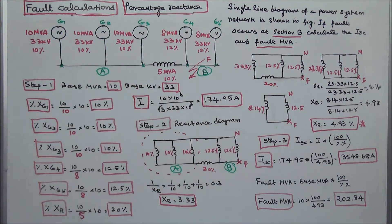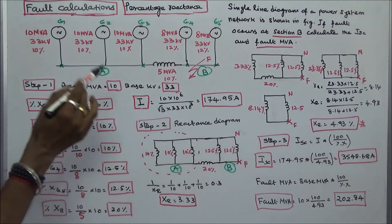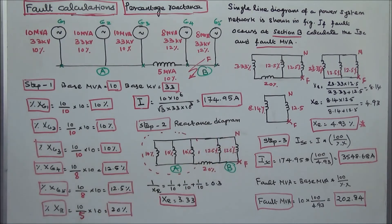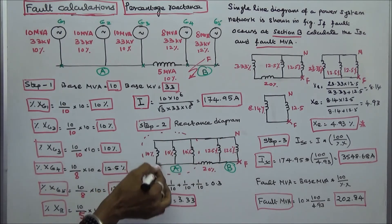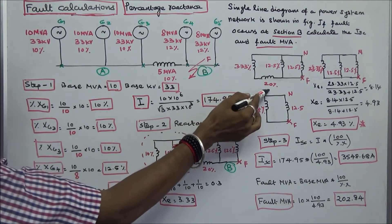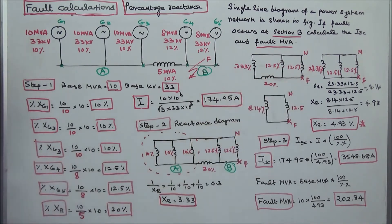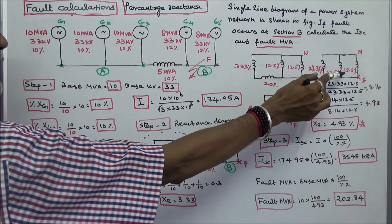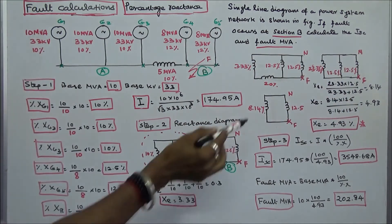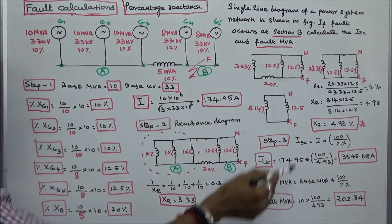This is the reactance diagram of the network. The three section A generator reactances are connected in parallel, giving an equivalent reactance of 3.33%. This is connected in series with the reactor reactance of 20%, giving 23.33%. The two section B generator reactances (XG4 = 12.5% and XG5 = 12.5%) are connected in parallel, giving an equivalent of 6.25%. The total reactance between the fault point and neutral point is 4.93%.